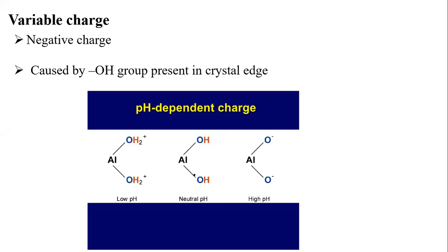At low pH, there is an abundance of H+ ions, which adhere to the OH groups on the surface, producing a net positive charge. At neutral pH, everything is neutralized. At high pH, hydrogen ions dissociate and move away, leaving a net negative charge. So in low pH we see positive charge; in high pH we see negative charge — completely pH-dependent.